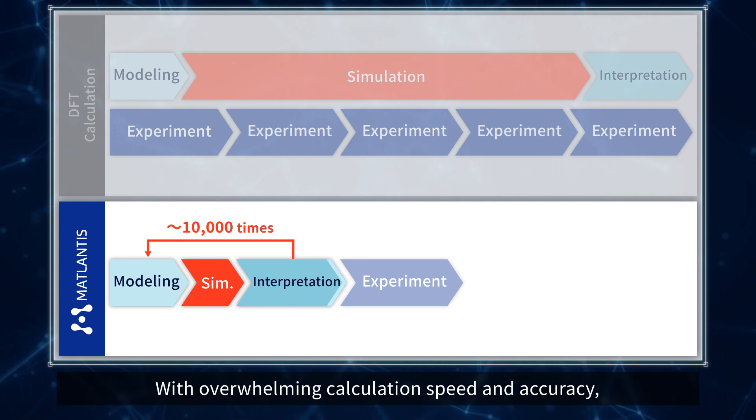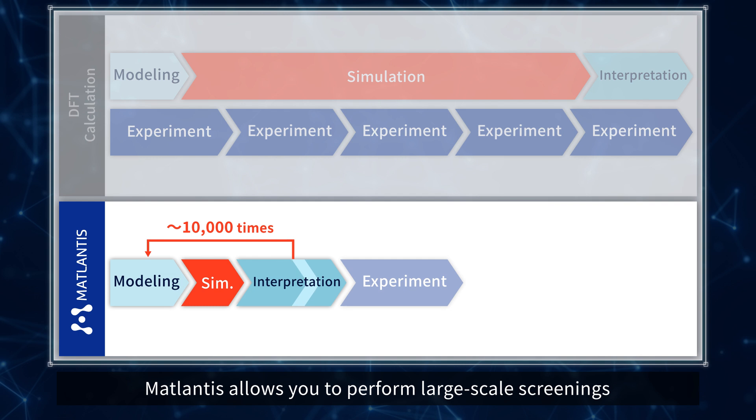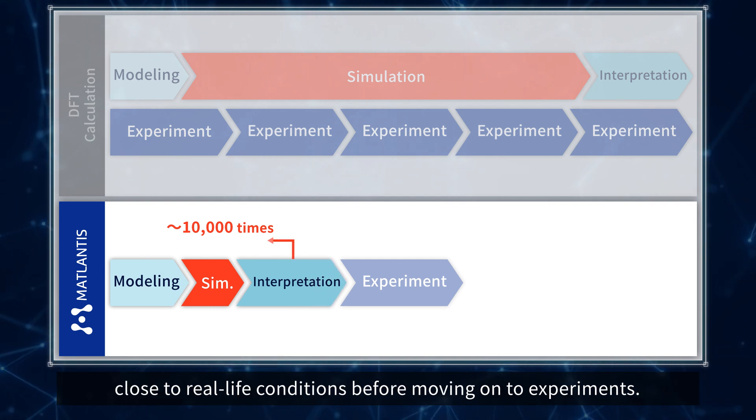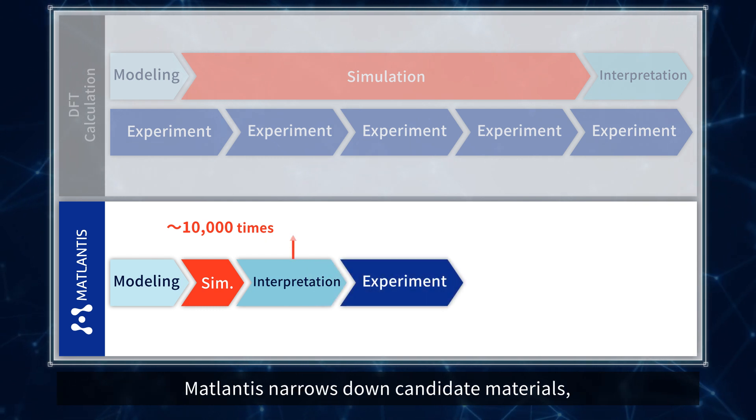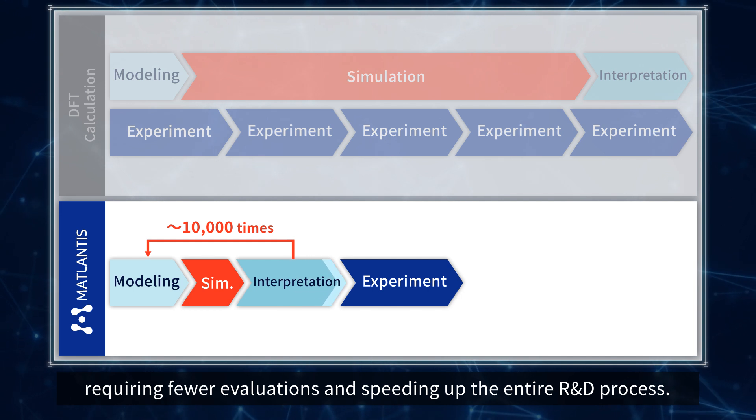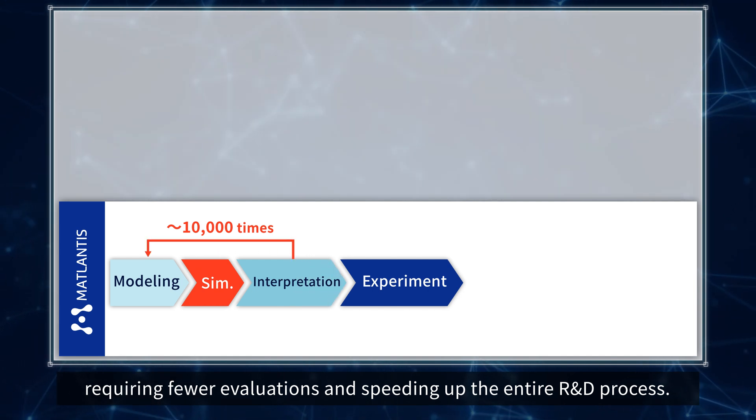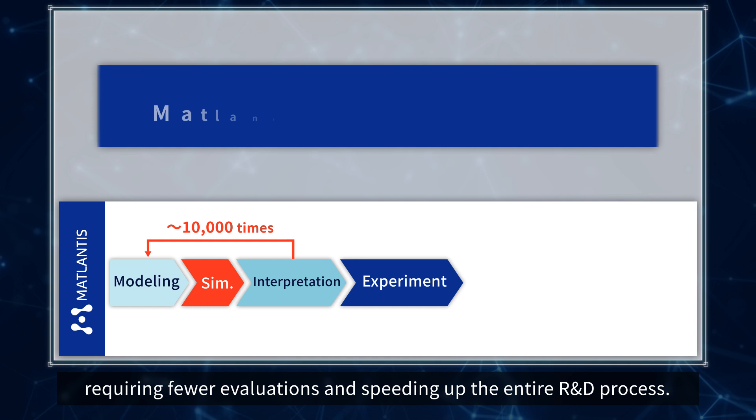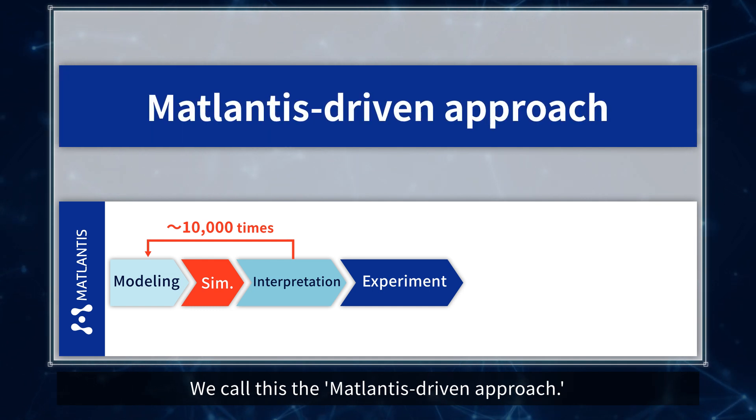With overwhelming calculation speed and accuracy, Matlantis allows you to perform large-scale screenings close to real-life conditions before moving on to experiments. Matlantis narrows down candidate materials requiring fewer evaluations and speeding up the entire R&D process. We call this the Matlantis-driven approach.